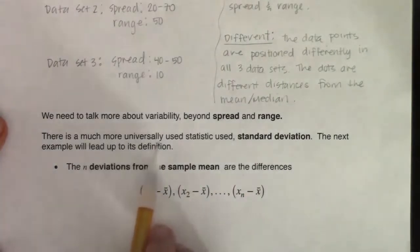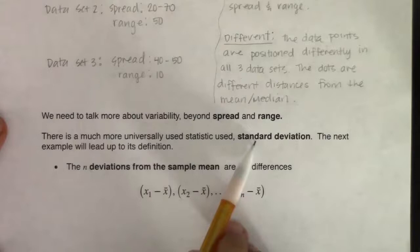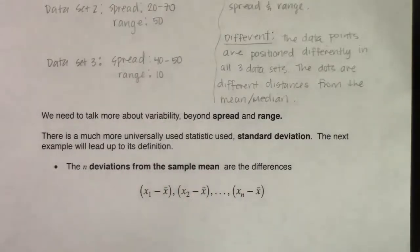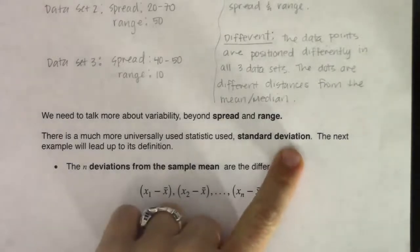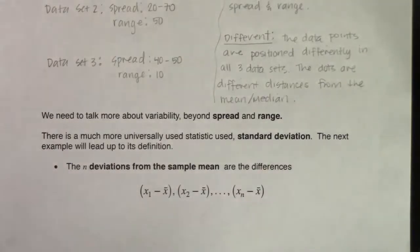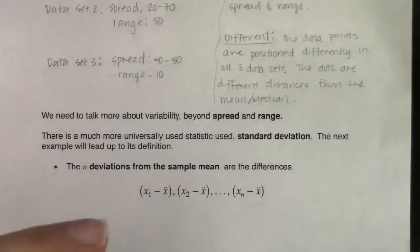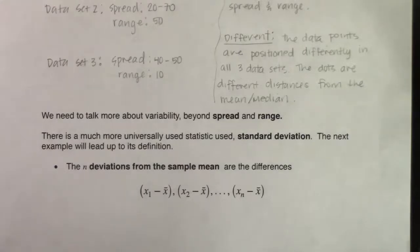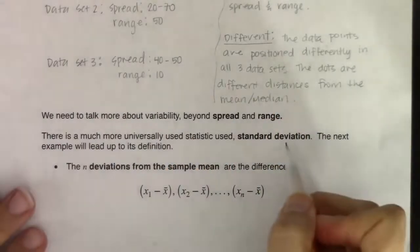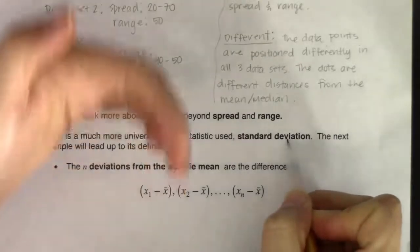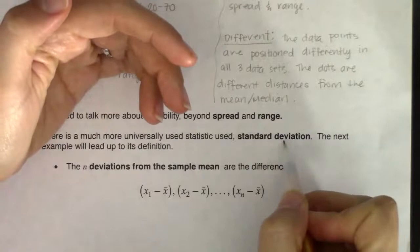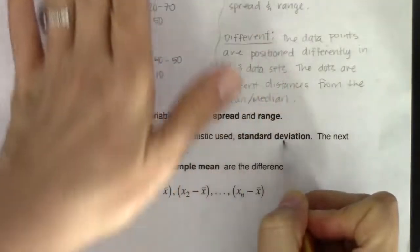That's why statisticians went beyond spread and range and came up with a fancier statistic called the standard deviation — a much more universally used stat. Let's ignore the word 'standard' for now and think about 'deviation.' How would you use deviation in real life? When I hear 'deviate,' I think of going off a path — whatever the normal route is, going a little around that. In statistics, deviating means deviating from the mean.